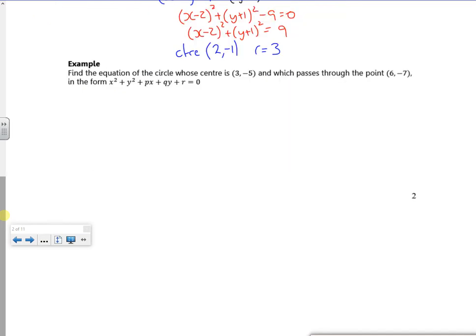So let's have a drawing then. Here's our circle, here's our centre at (3, -5). It passes through the point (6, -7). So there's (6, -7). In hindsight, it should maybe have moved the point on the other side, but that doesn't matter.